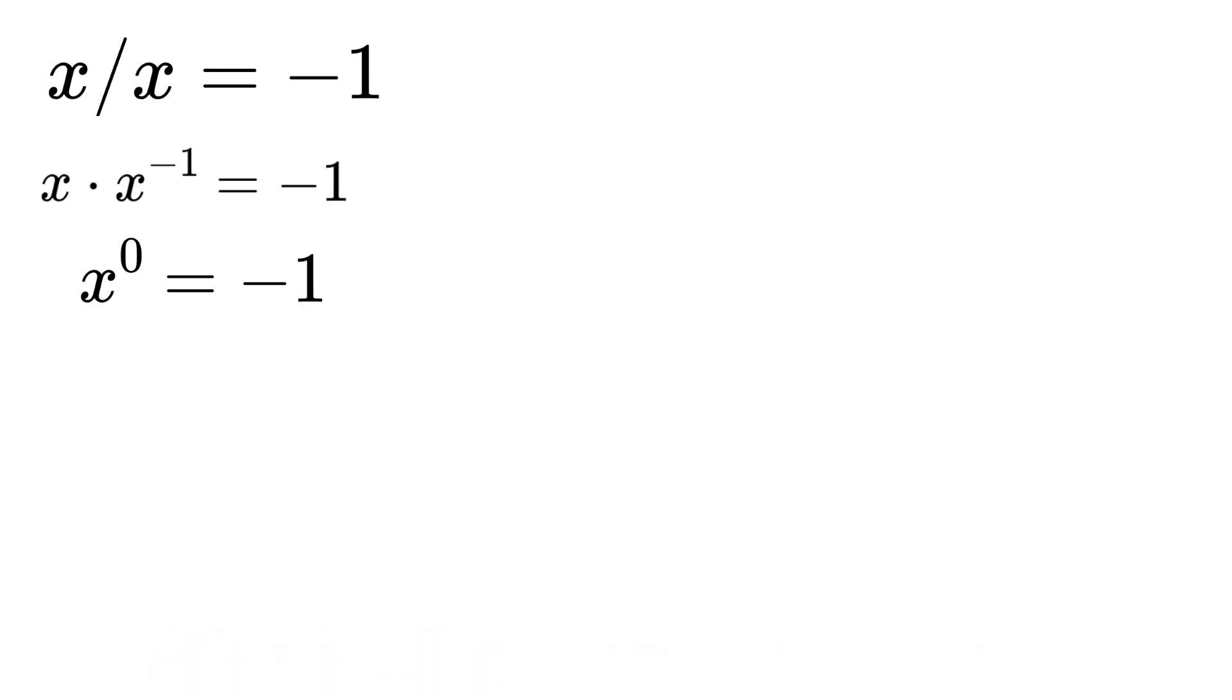Now we have the equation x to the power of zero equals negative one. Take the natural logarithm of both sides. If you're a subscriber to this channel, you know that the natural logarithm of negative one is j, which is the virtual unit of the virtual number system.